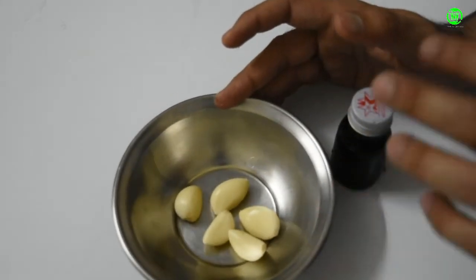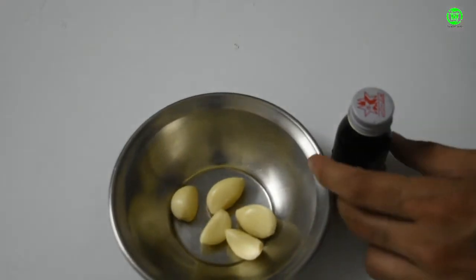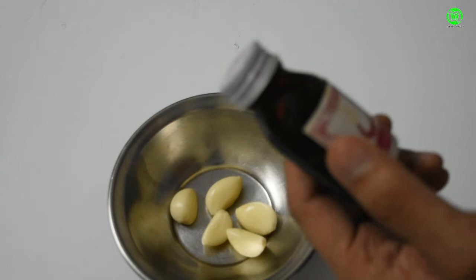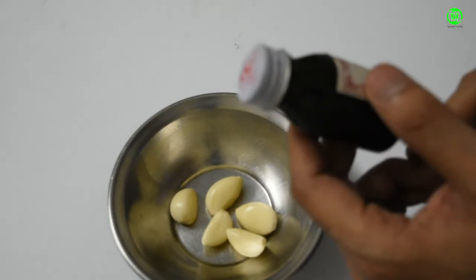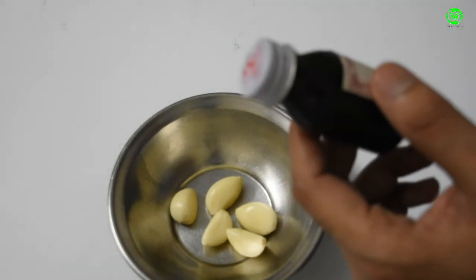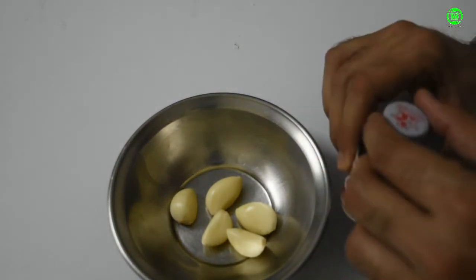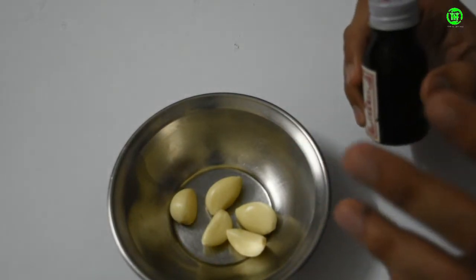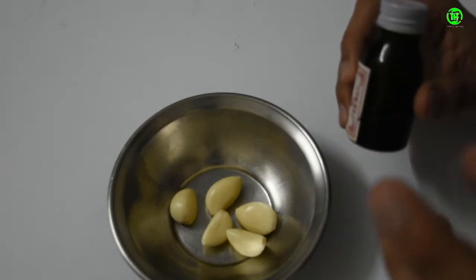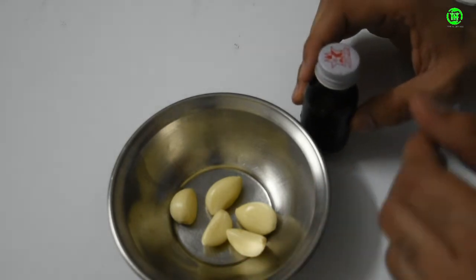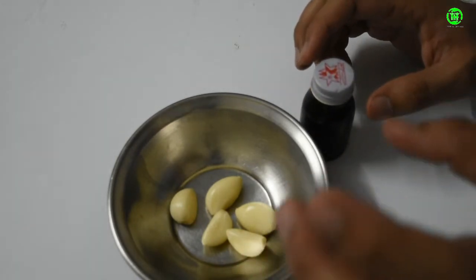And the second thing that we have is sesame oil. Basically, sesame oil is a good source of fiber. It may lower your cholesterol, it may increase your nutrition and proteins, it also helps to lower the blood pressure, it also makes your bones healthy, and it has vitamin B. So these two things I'm going to make this oil.